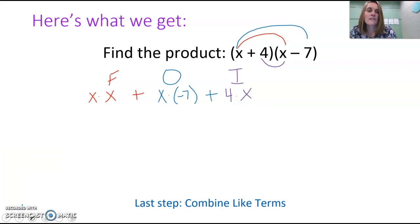We'll finish by multiplying our last terms together, which would be 4 times negative 7. If you notice, I really just distributed. To do FOIL, you just distribute x to both of the terms in the second parentheses. You're taking each term of your first parentheses and distributing it to each term of your second parentheses. So I distributed x to x and negative 7, then I distributed 4 to x and negative 7.